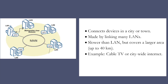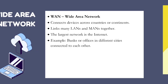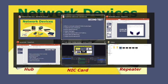MAN — Metropolitan Area Network — covers a city or town and is made by linking many LANs together. It is slower than LAN but covers a larger area of up to 40 kilometers. An example is cable TV. WAN — Wide Area Network — connects devices across countries or continents, linking many LANs and MANs together. The largest WAN is the internet, and an example is the banking network.